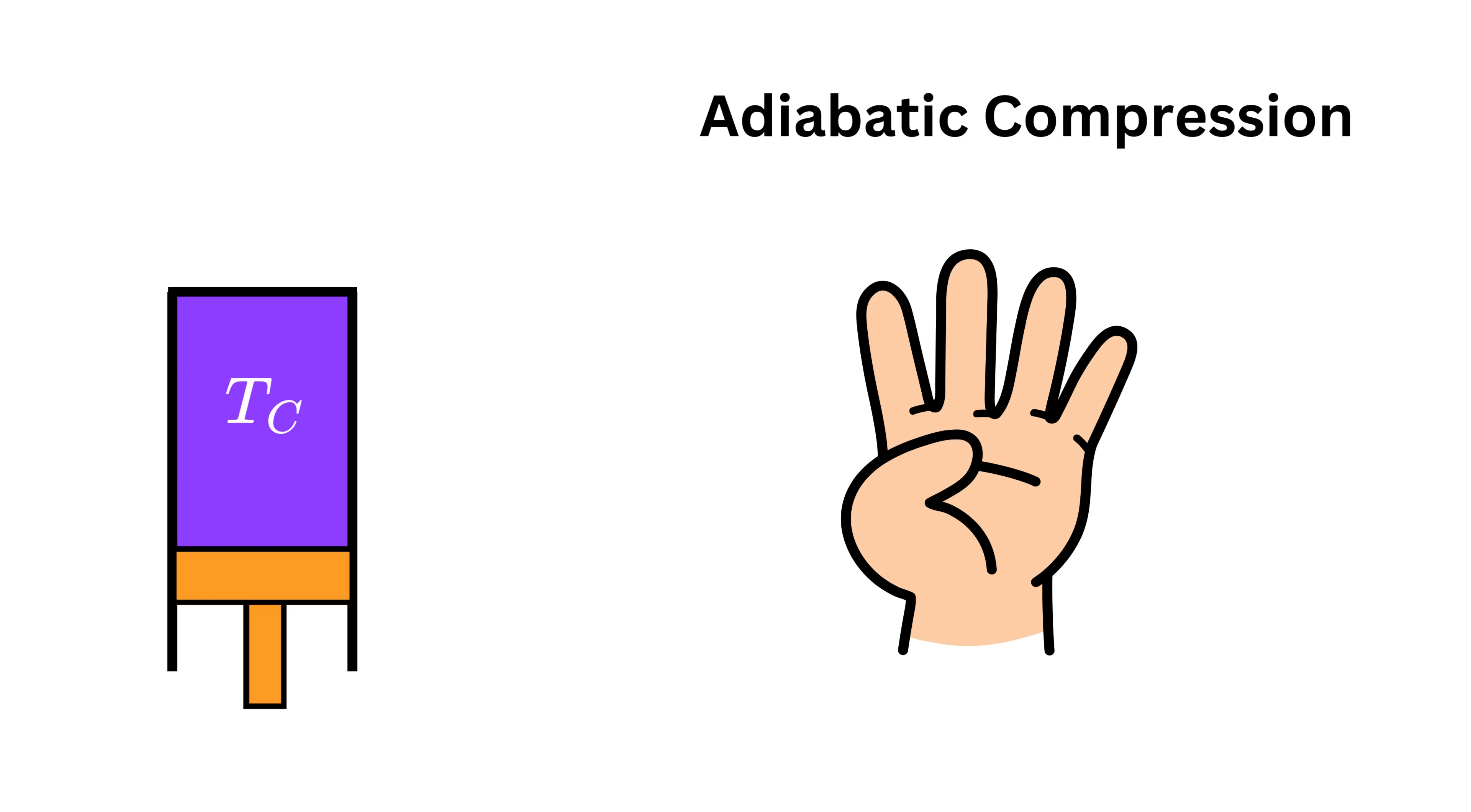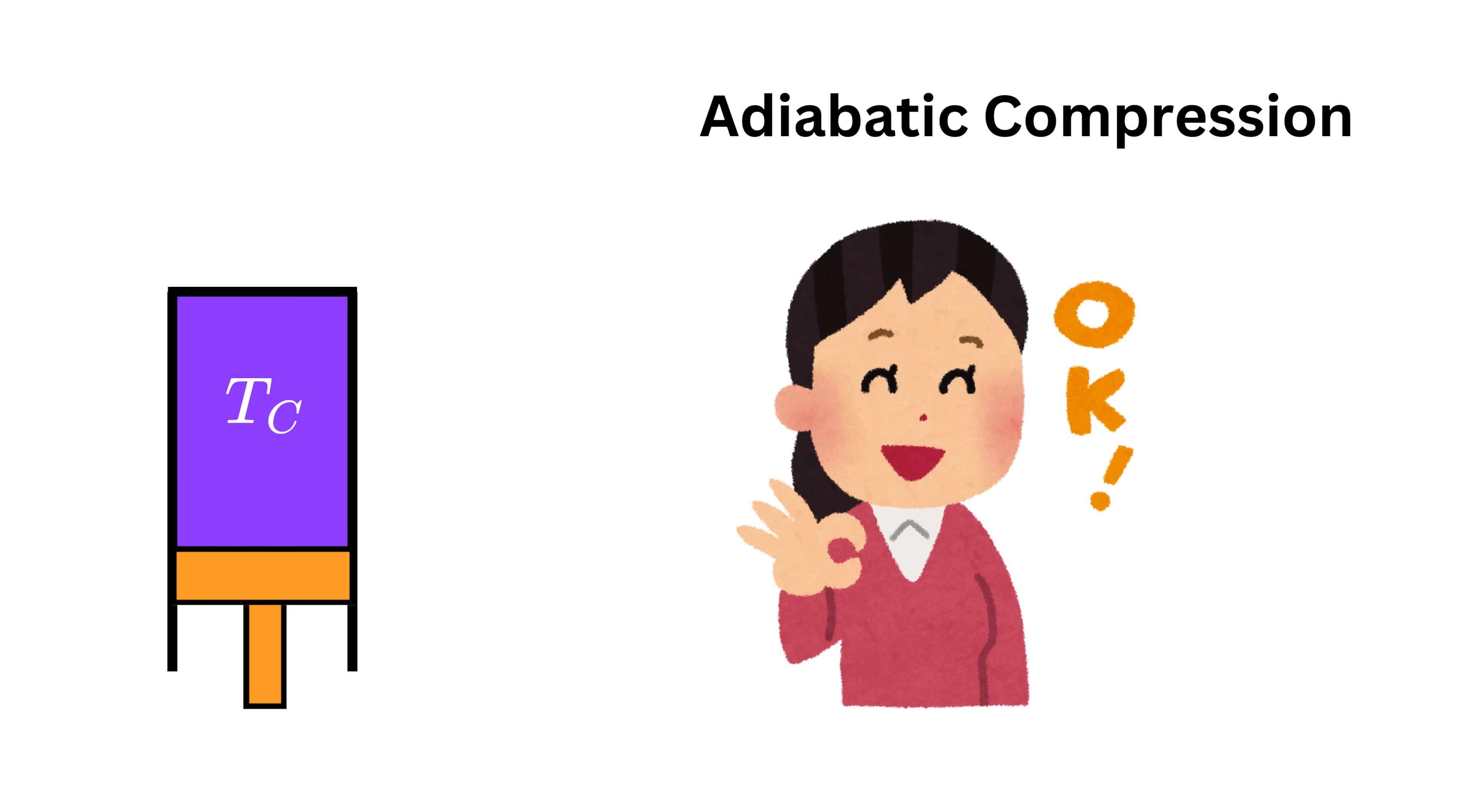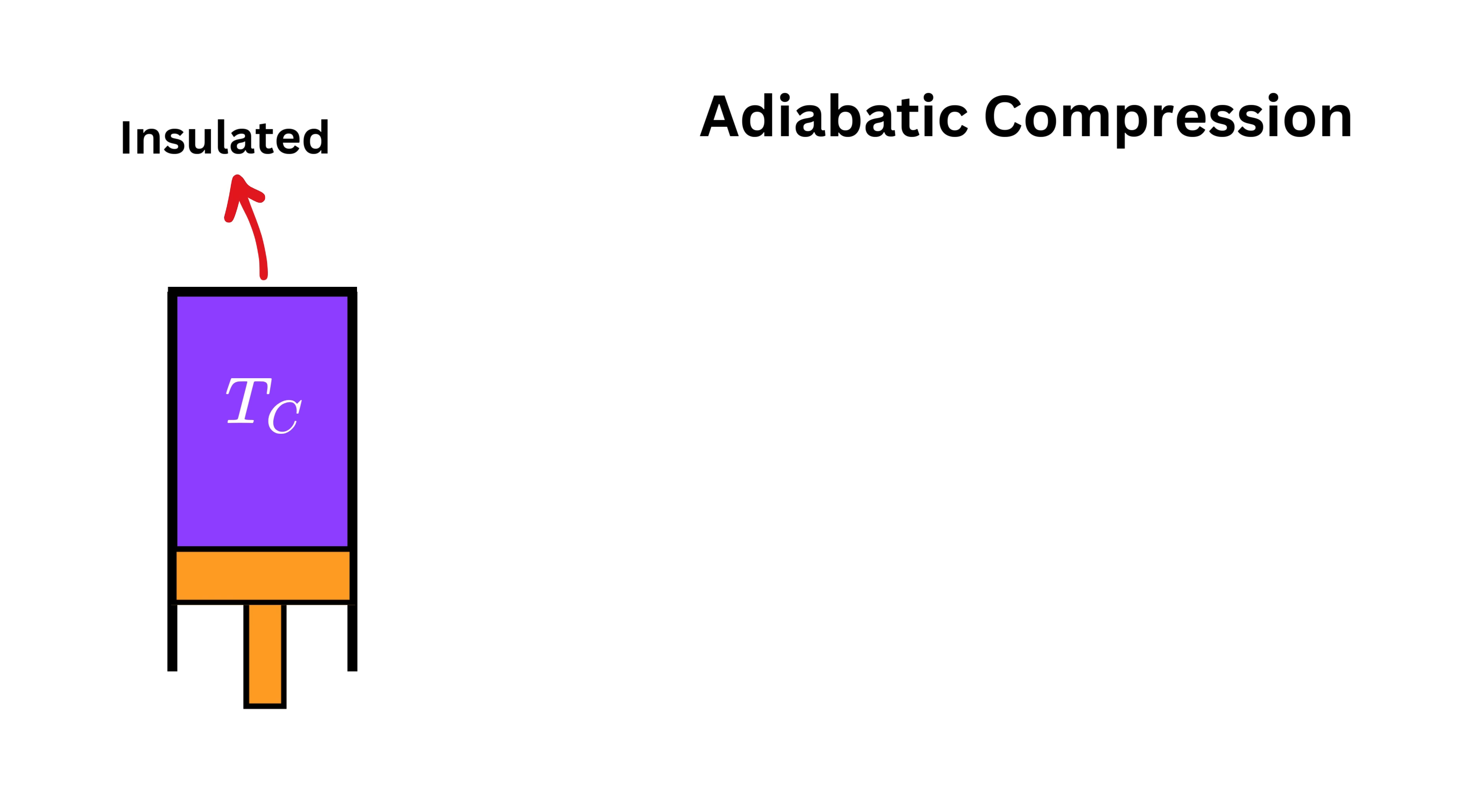The fourth and final step is called adiabatic compression. Now I think you know the meaning of both the words. In this step, the gas is completely insulated from both hot and cold reservoirs.